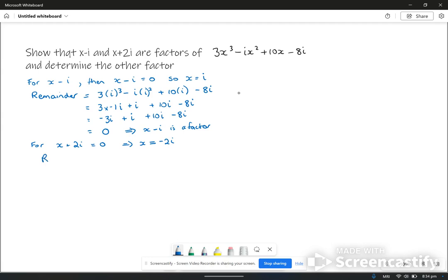Put that negative 2i into the remainder theorem. So that would be 3 times negative 2i cubed minus i times negative 2i squared plus 10 times negative 2i minus 8i. Hopefully when you finish all of that, that will give you 0 and hence you've proven that x plus 2i is a factor.